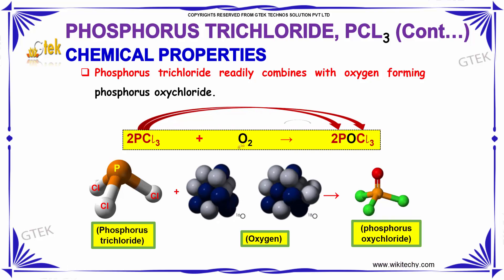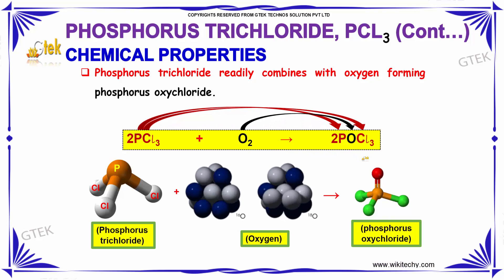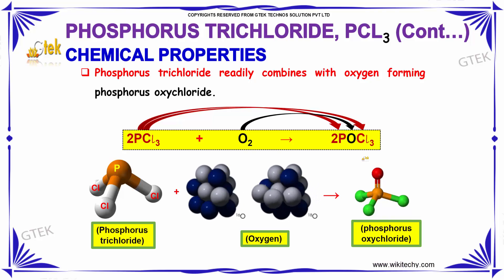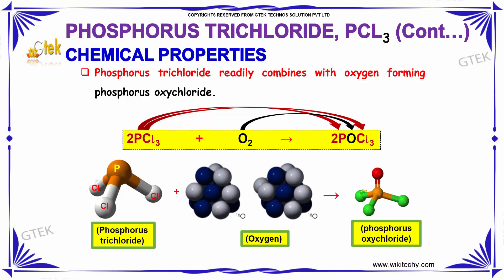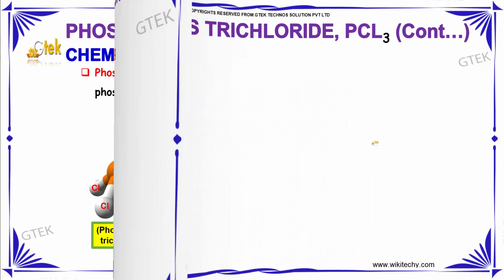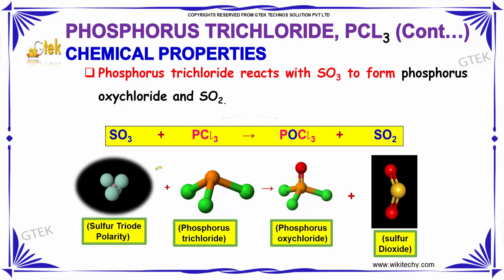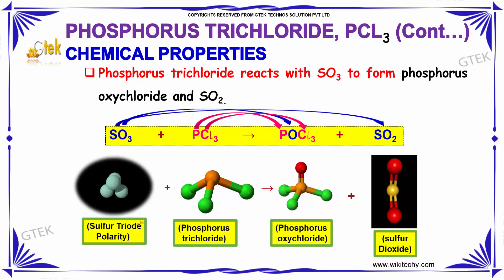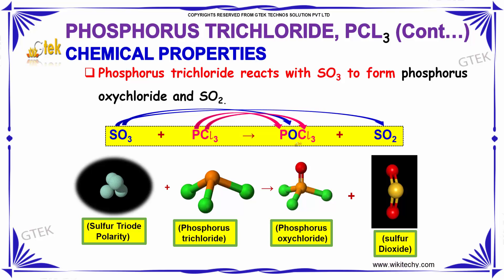When PCl₃ is mixed with oxygen, it forms phosphorus oxychloride (POCl₃). Similarly, sulphur trioxide (SO₃) reacts with phosphorus trichloride to give phosphorus oxychloride and sulphur dioxide.